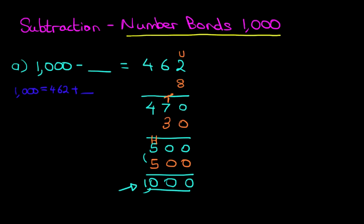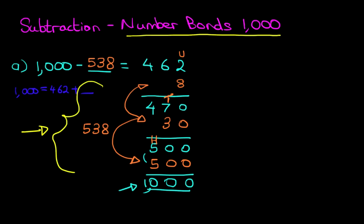We're doing number bonds to 1000. So what numbers did we add to get to 1000? We've got eight. We've also got 30. And we've also got 500. So we've got 538. That is the answer. 538. So 1000 minus 538 equals 462. And as we mentioned before, with a bit of practice, you won't need to do any of the workings out over here. You will simply work this out in your head. To do that, it requires practice. And we will practice with one more.